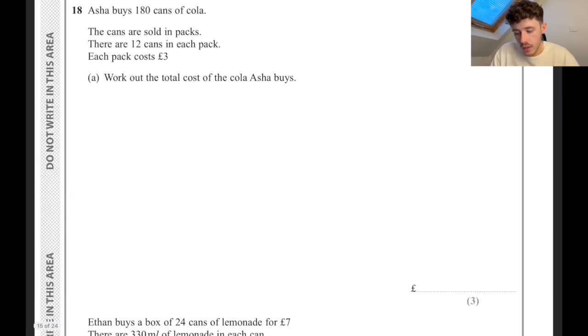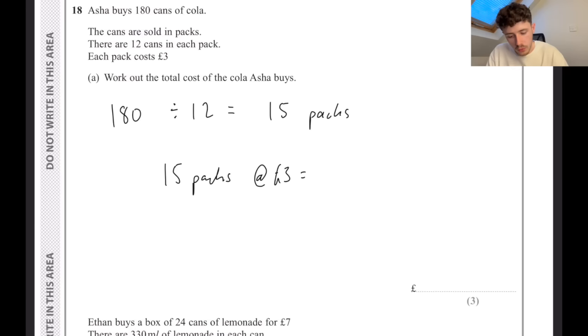Asher buys 180 cans of cola. The cans are sold in packs. There are 12 cans in each pack. Work out the total cost. So 180 cans, and if there are 12 cans in each, you can divide that by 12 to work out how many packs. That is going to be 15 packs. So 15 packs at £3 each is going to be £45.